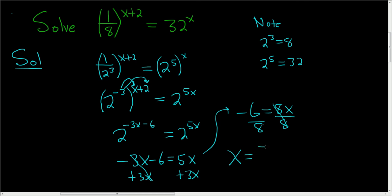2 goes into 6 three times, so we get negative 3 divided by, and then 2 goes into 8 four times. So the final answer is x equals negative 3 over 4.